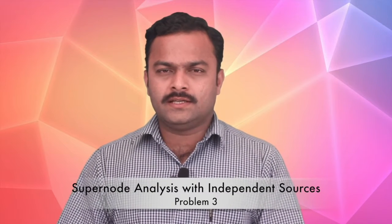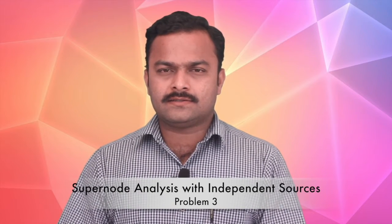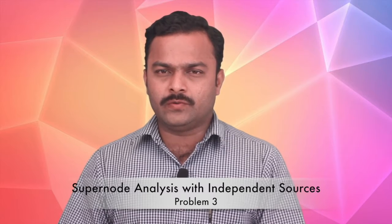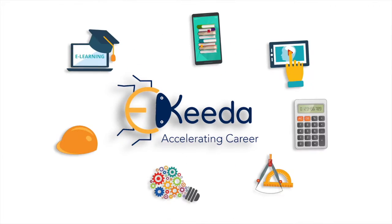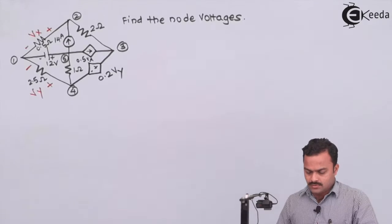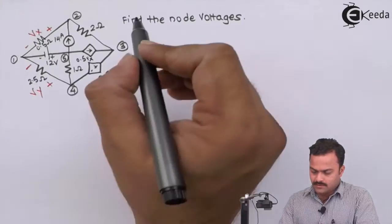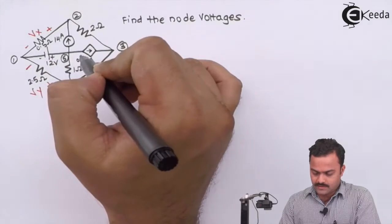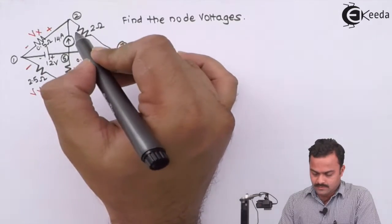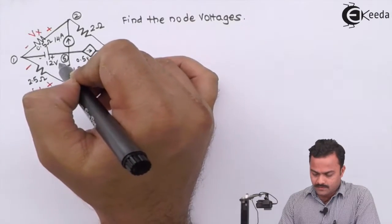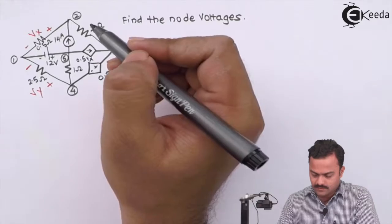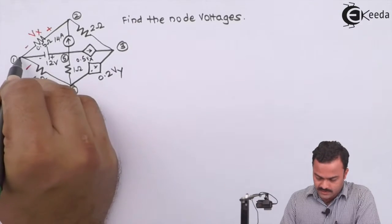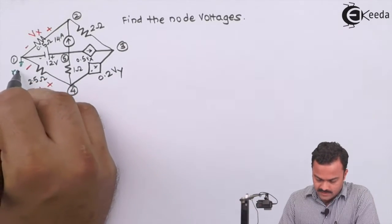In this video we are going to see super node analysis, which is an application of KCL whenever a voltage source is present between two nodes. We will also see cases with dependent sources present. We are supposed to get the node voltages present in the circuit. There are several nodes marked and we have to get the potential of all of them. Out of the five nodes, one has to be the reference — we'll take the reference point where the negative end of the independent voltage source is connected.